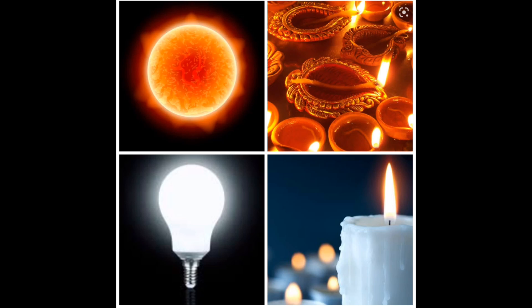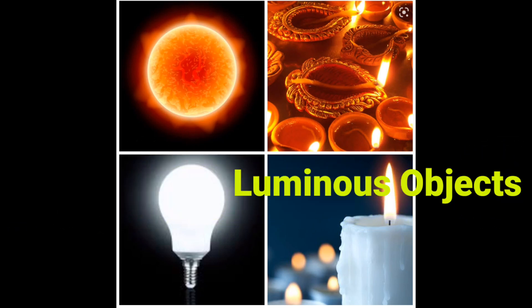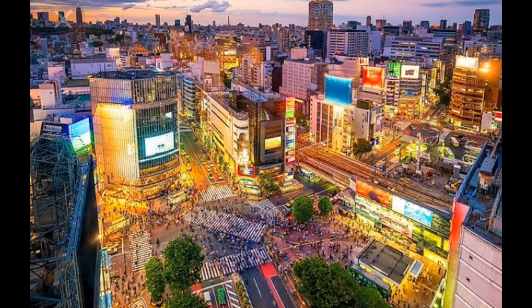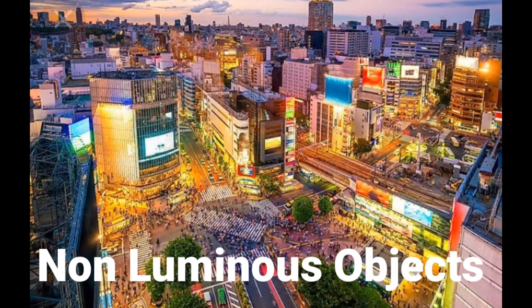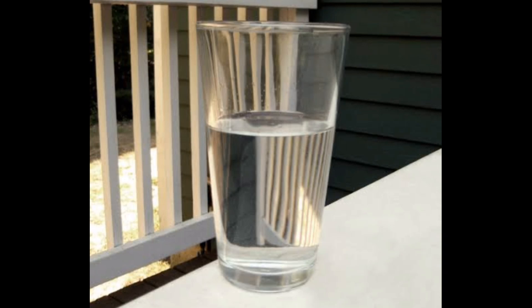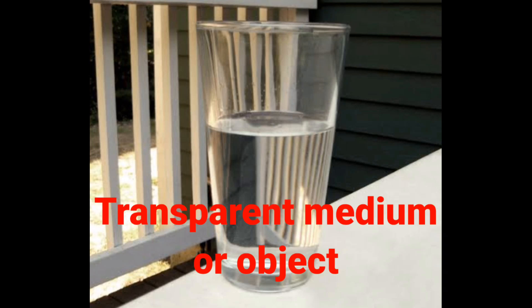All the objects that can emit light are called luminous objects. The other things that cannot emit light are called non-luminous objects. Light always travels in a straight line.